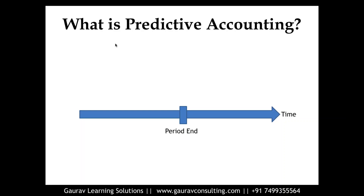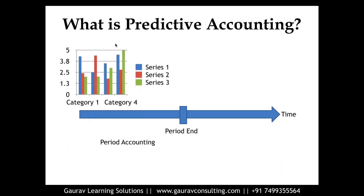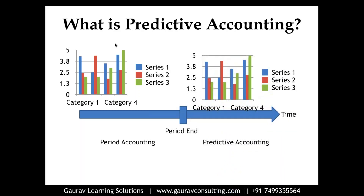Over the next few days — maybe two to five days — companies will be concentrating on finalizing the results of October. Financial reporting normally talks about what has happened in the previous month or previous period. So instead of focusing on what is going to happen next month, normal period accounting focuses on the period which is already closed. So period accounting is something which is before where we are standing today.